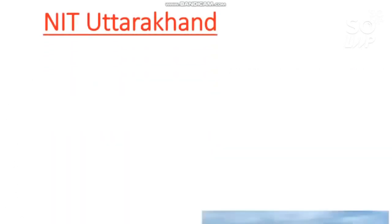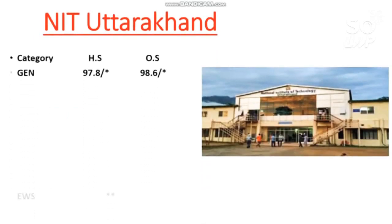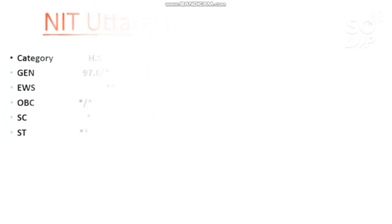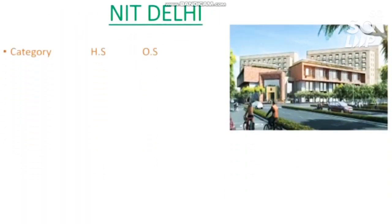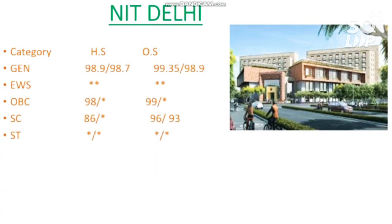The next NIT is NIT Uttarakhand. Category-wise cutoff: for General, 98.6. EWS: no seat. OBC: 98.2. SC: no seat. ST: no seat. The next NIT is NIT Delhi: for General, 99.35 percentile. EWS: no seat. OBC: 99 percentile. SC: 96. ST: no seat.